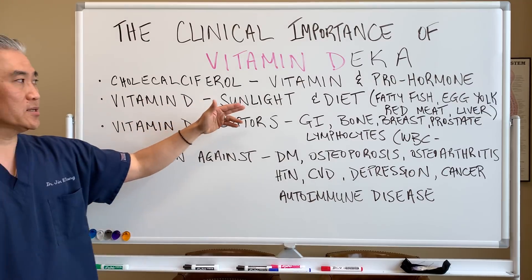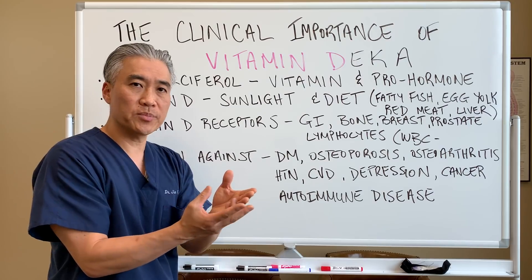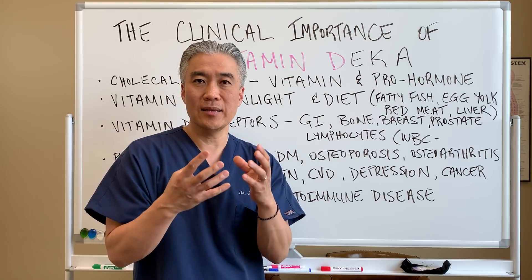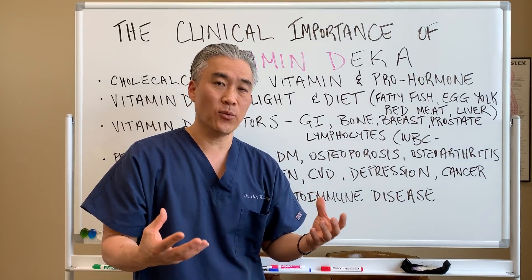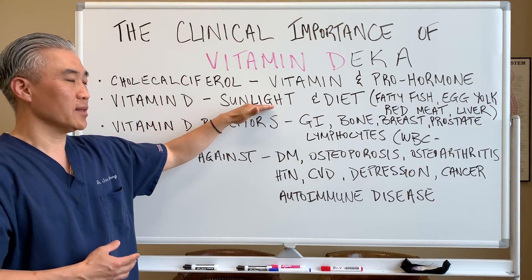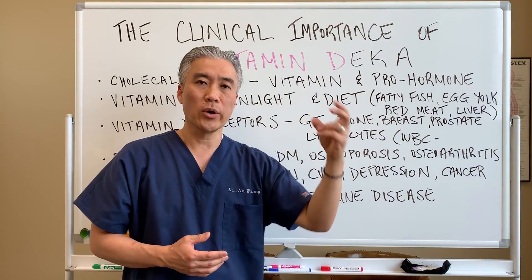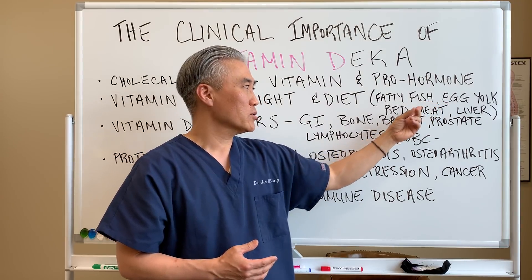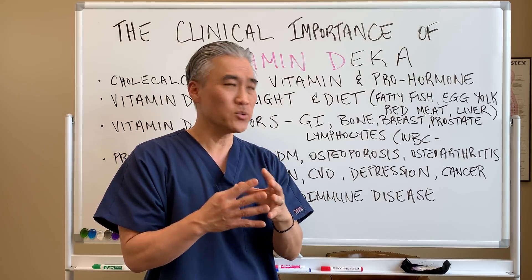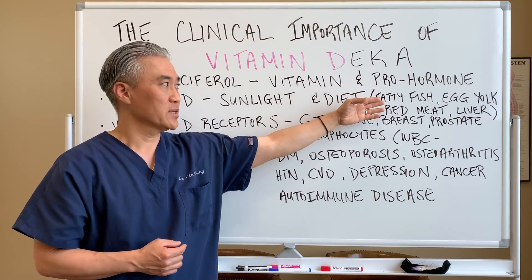Vitamin D is taken in through sunlight — it impacts the skin, gets absorbed, gets converted, goes to the liver, gets converted, goes to the kidney, and then gets converted to an active form of vitamin D. You can also get it from diet — from oily or fatty fish, egg yolk, red meat, liver, and some plant-based foods. Most of it is coming from these types of sources.